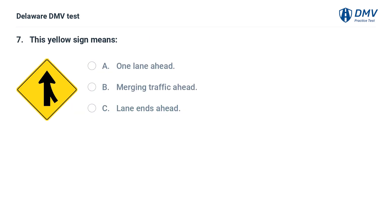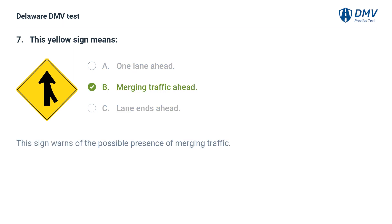This yellow sign means: A. One lane ahead. B. Merging traffic ahead. C. Lane ends ahead. Answer: B. Merging traffic ahead. This sign warns of the possible presence of merging traffic.